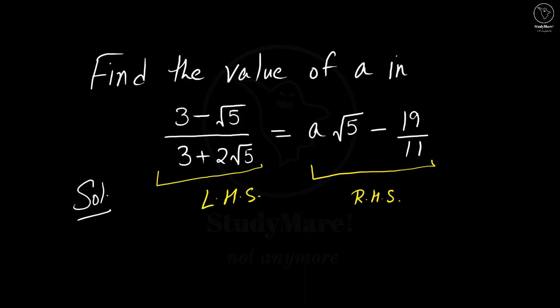Looking at the LHS, that is the left-hand side, you can see that it can be reduced, while the RHS is already in its reduced form. Once we reduce the LHS and put it in a format similar to the RHS, we can easily compare the two sides and find the value of A.